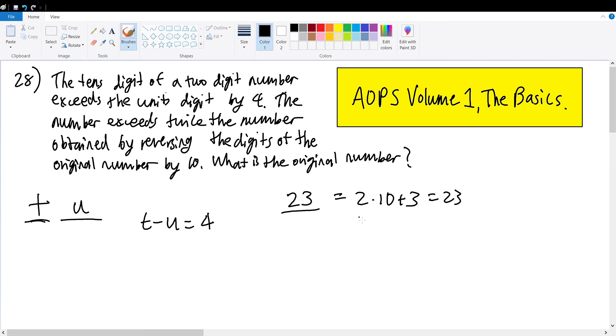This becomes 23, and that is the same thing in base 10 for expressing tu. So tu, this two-digit number, can be expressed by 10t plus u. So 10t plus u, our original number, exceeds twice the number obtained by reversing the digits - which becomes ut, thus 10u plus t - by 10. So this must equal 10.